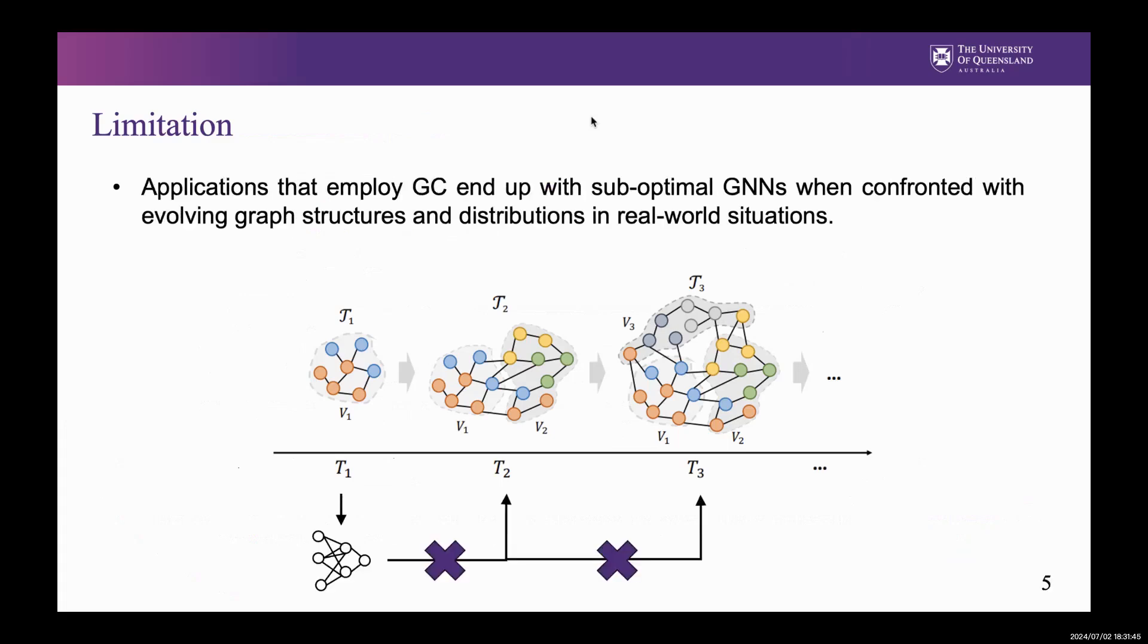However, existing GC only captures a static view of the original graph's distribution. This constrains the generalization of GNNs to graphs with distribution shifts.